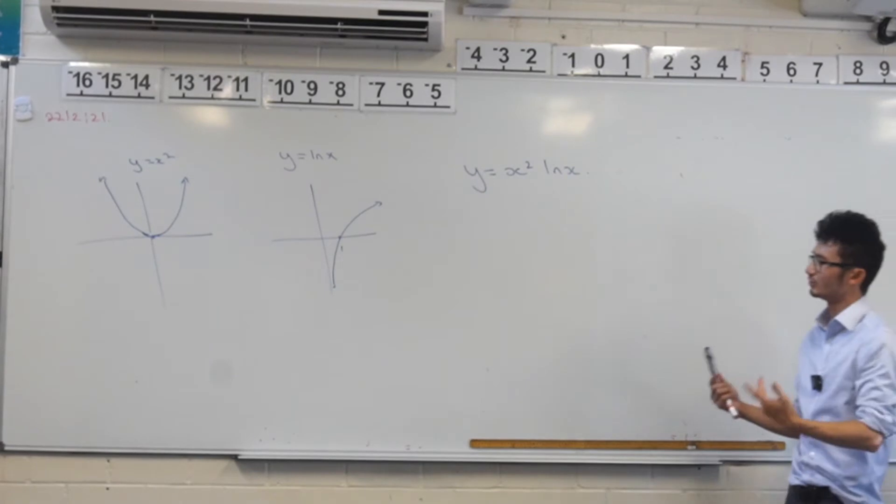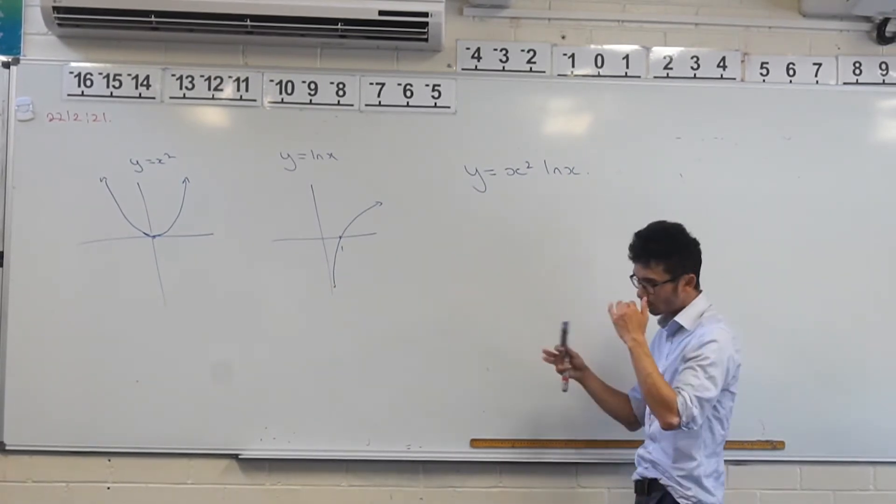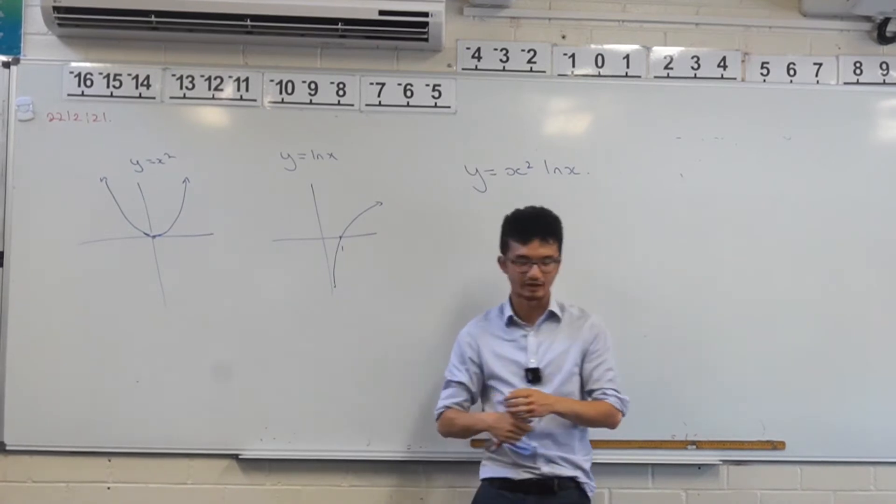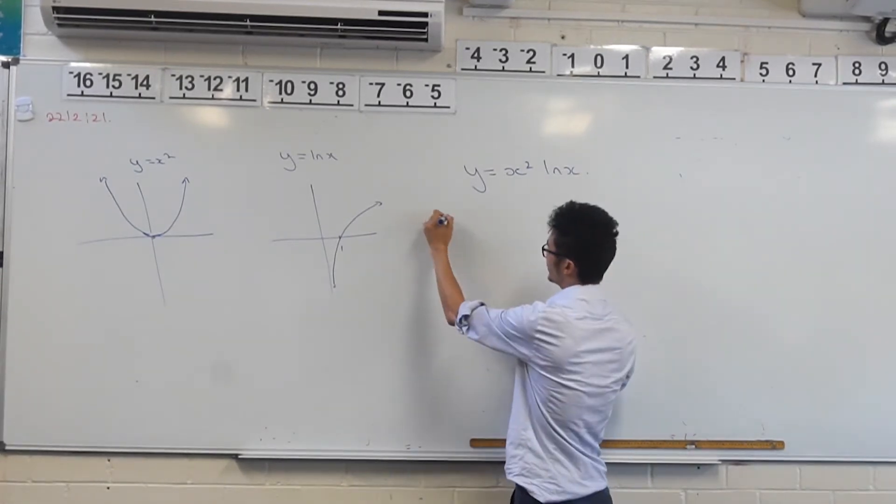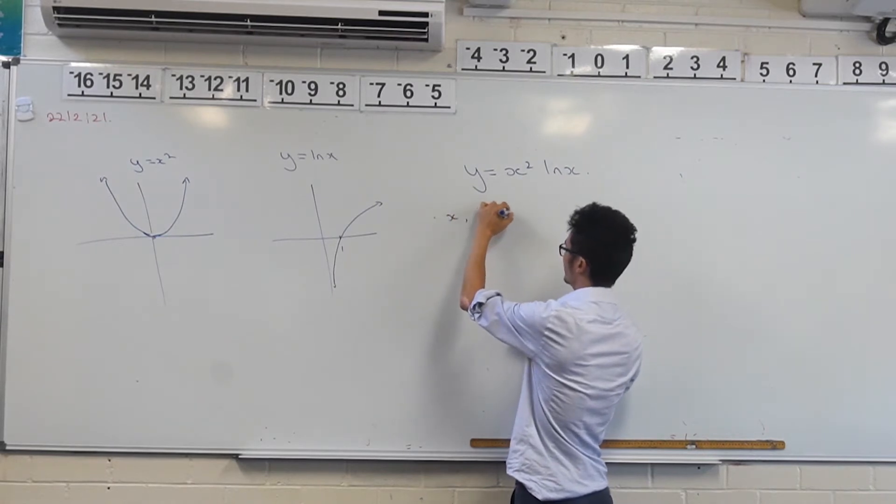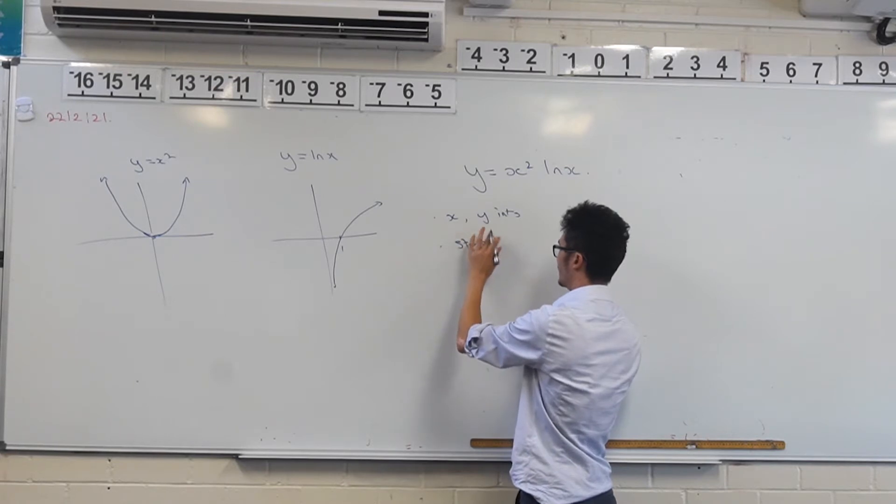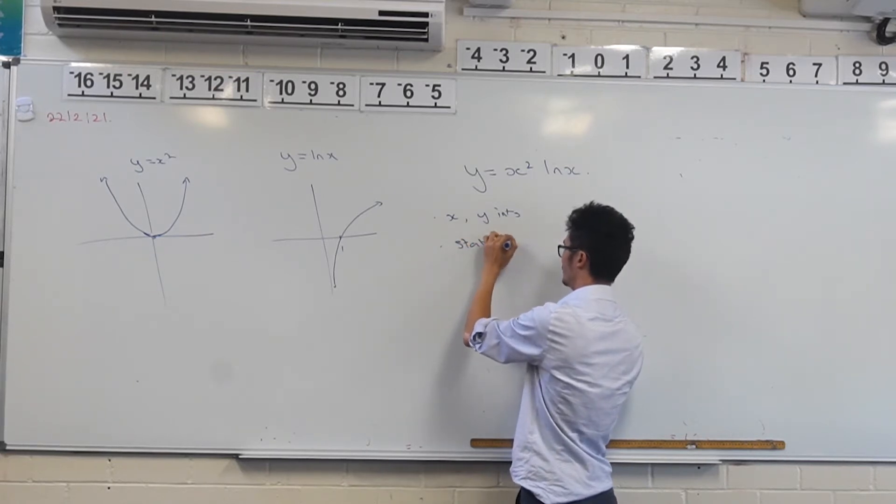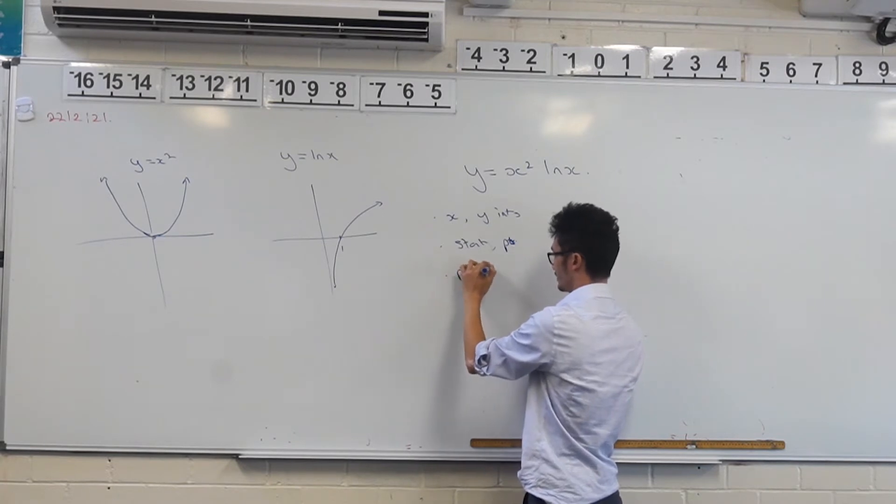But how can we use calculus? How can I use calculus to do this? Well, the order that it kind of goes on, we think about what are the key features that we want to look at. You want to look at x and y-intercepts, you want to look at stationary points, and you want to look at points of inflection as well.